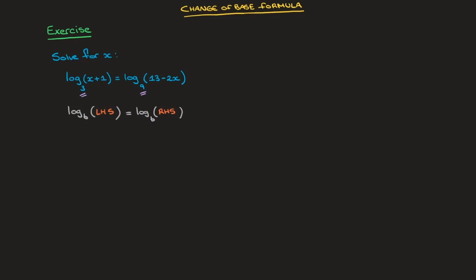In other words, we can go ahead and state that LHS, the left-hand side, equals whatever we have inside the logarithm on the right-hand side, so equals RHS. And that summarizes how to solve logarithmic equations like this one.